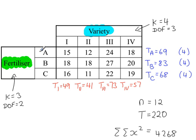For our fertilisers, we have three samples A, B, and C, or three levels. So 2 degrees of freedom, k minus 1 degrees of freedom. And similarly for the varieties, there are four varieties. So 4 minus 1, 3 degrees of freedom.